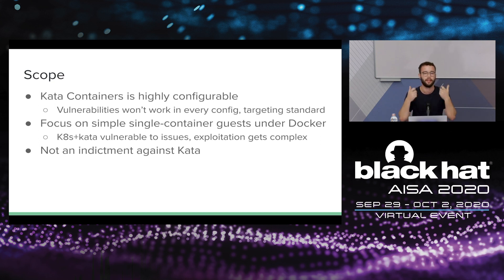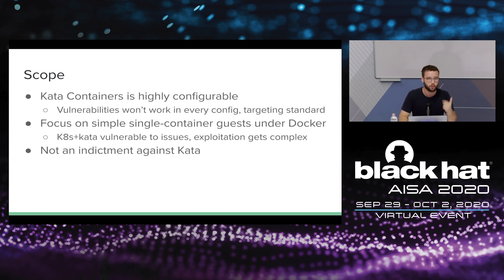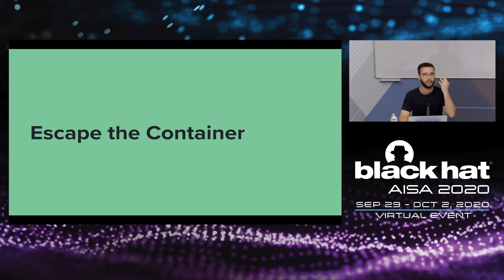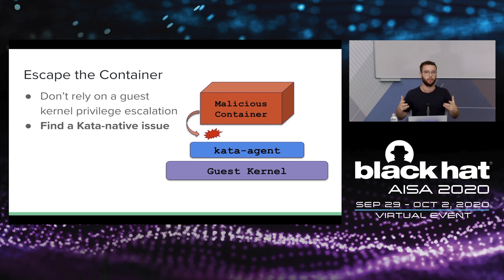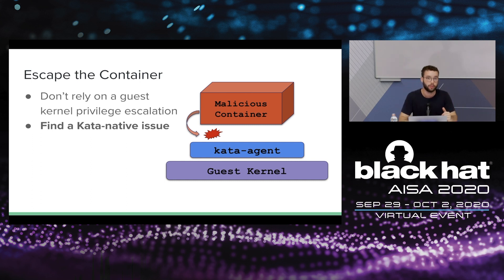This is not an indictment against Kata — every software will have its share of vulnerabilities. I want to show this so you can learn about container security. Our first job is to escape the container. We could rely on a kernel vulnerability, but that misses the point — we want to find a native issue with how Kata sets up the container inside the guest virtual machine. To do that, we need to understand what those issues look like and how to approach the task of breaking a container runtime.